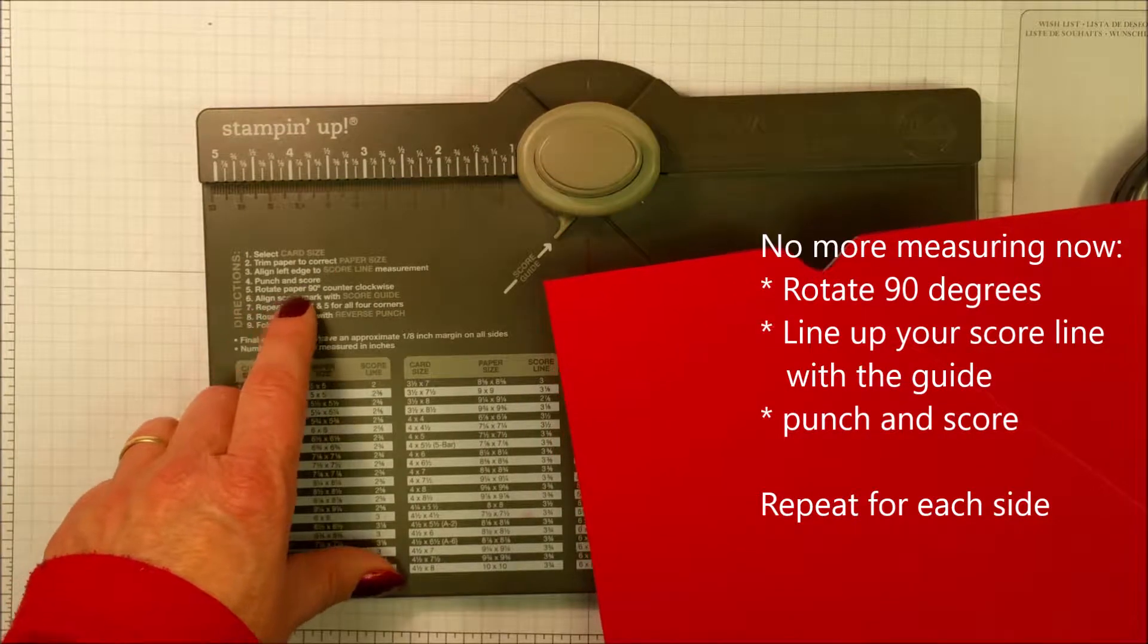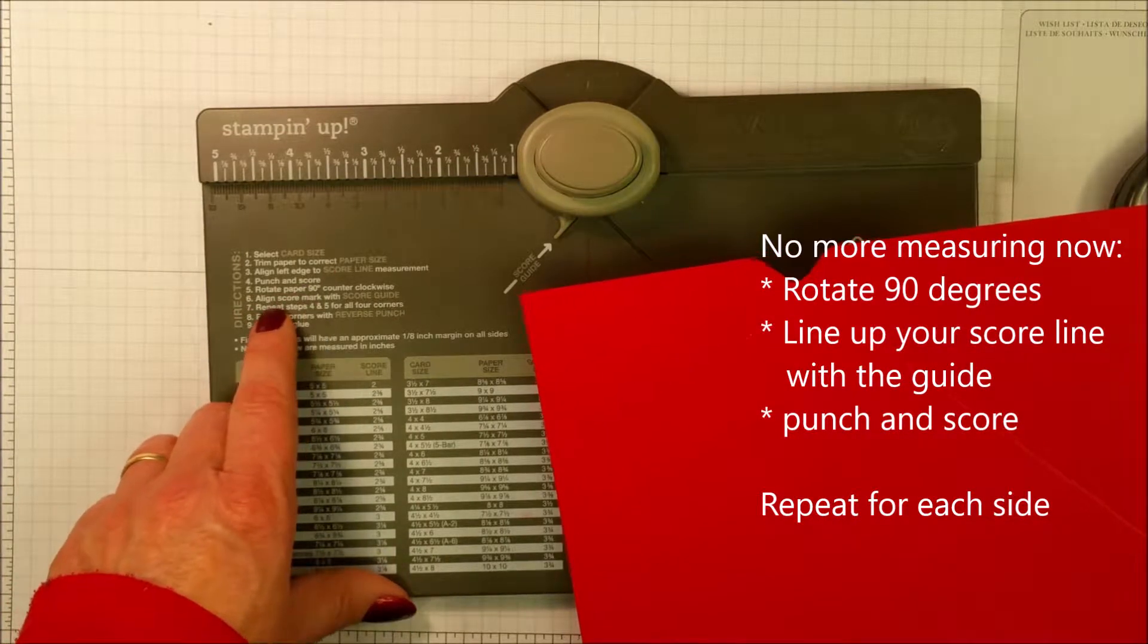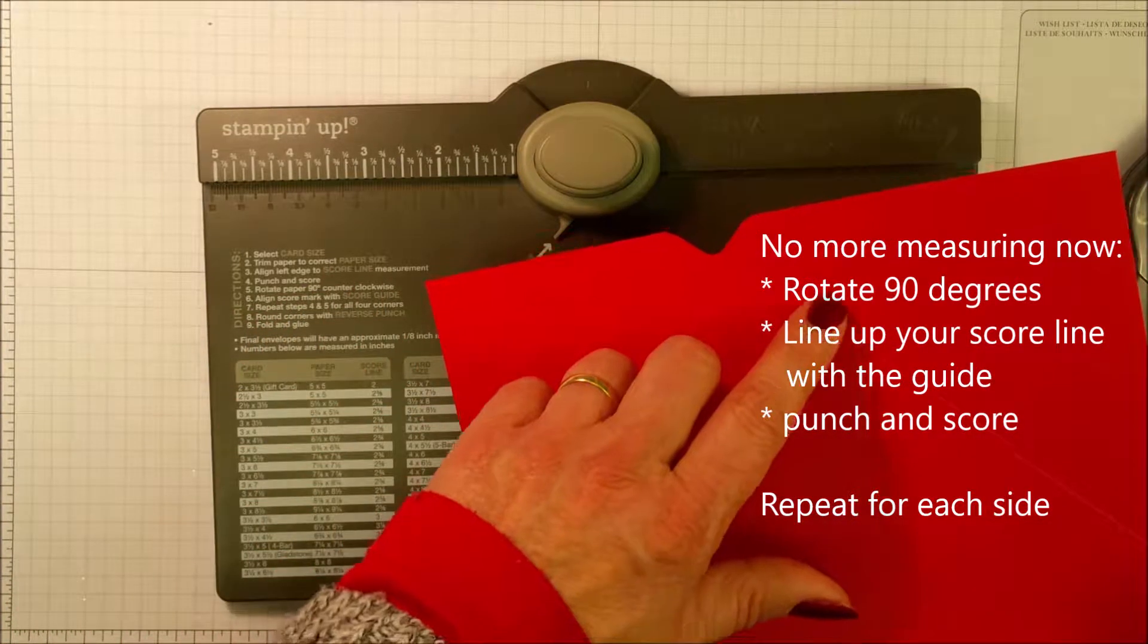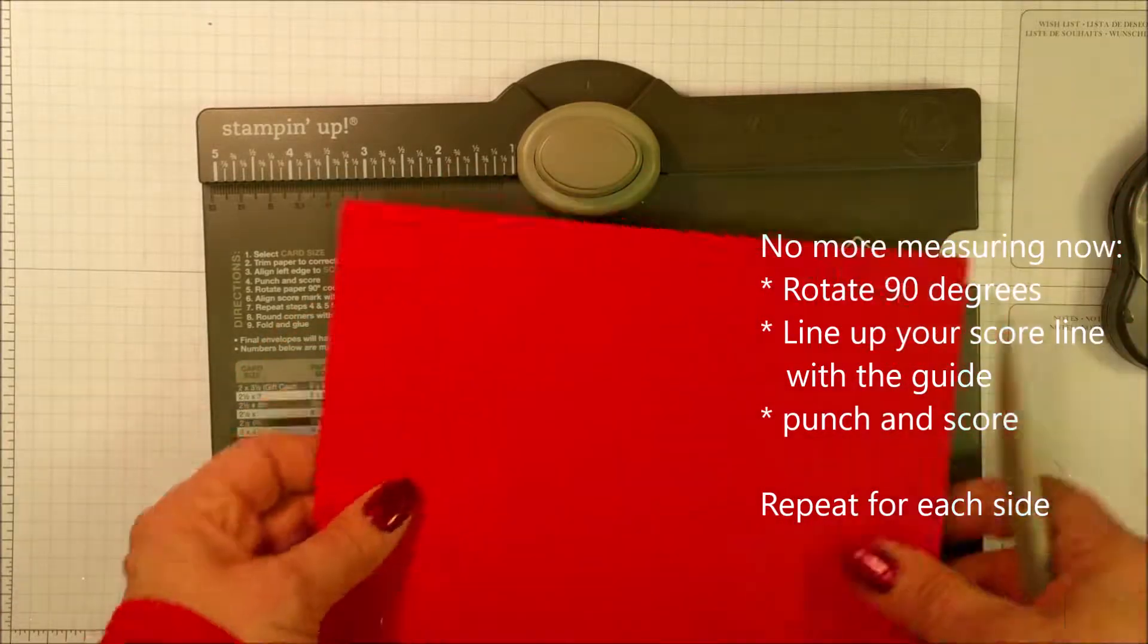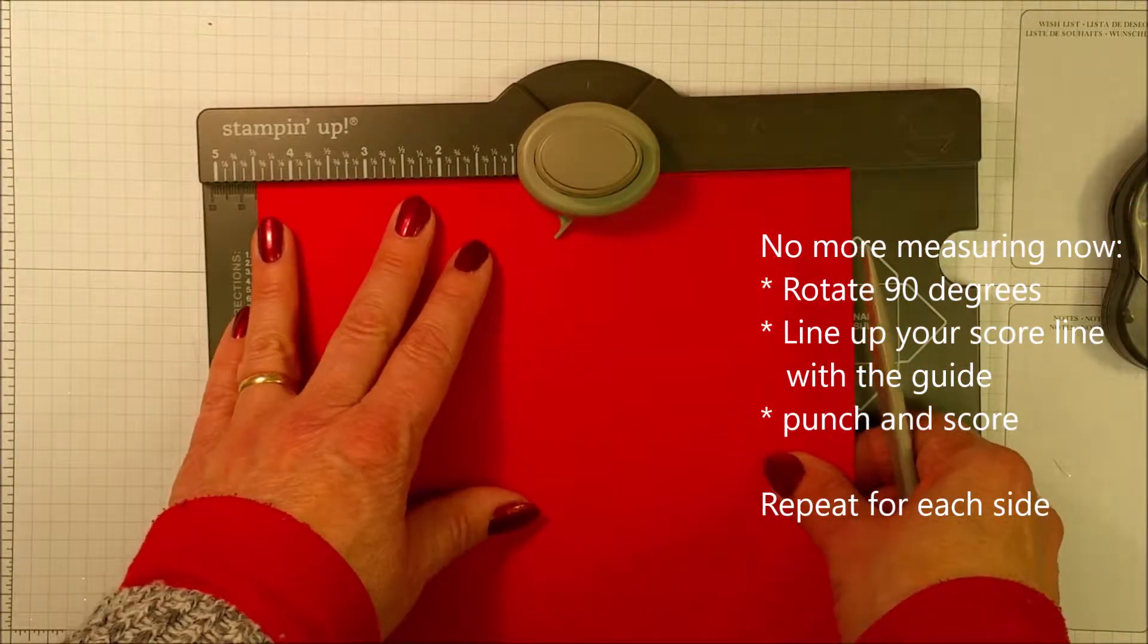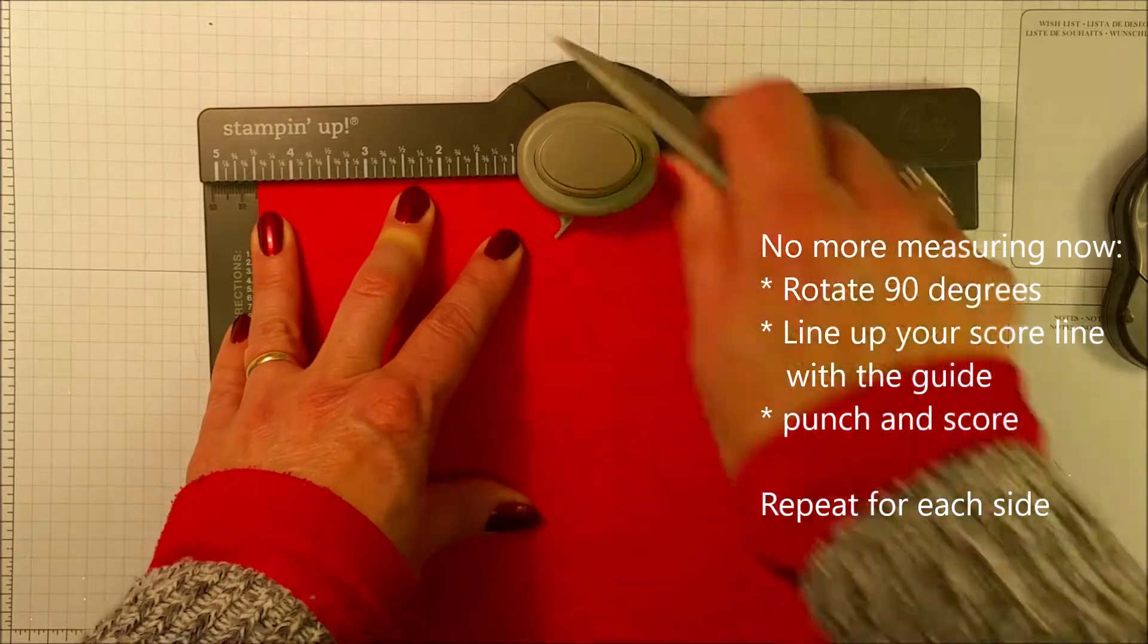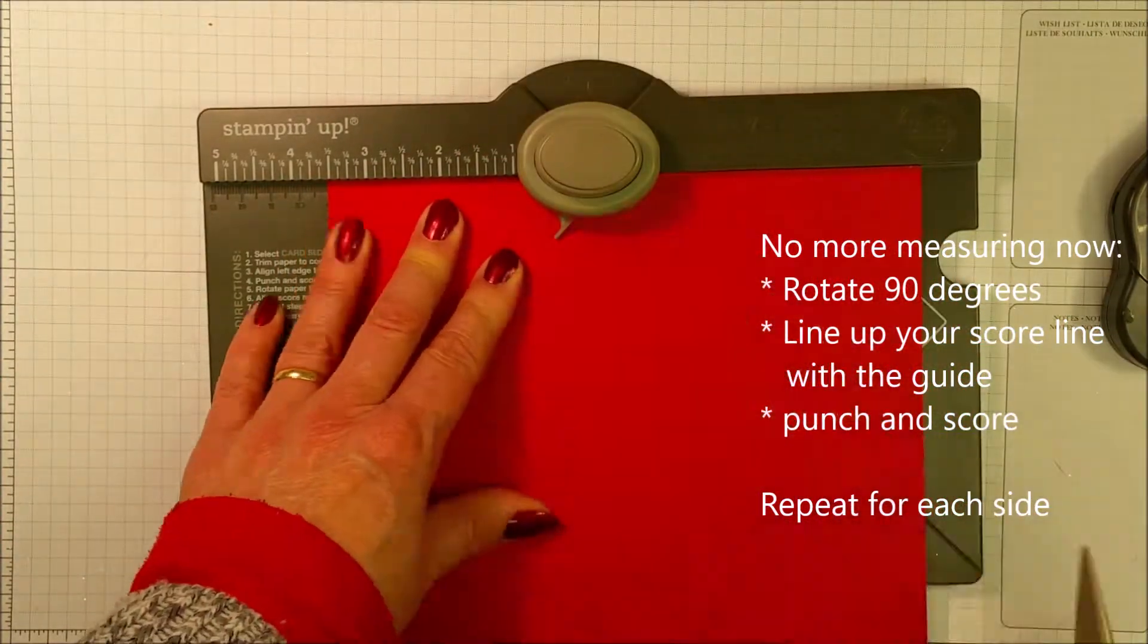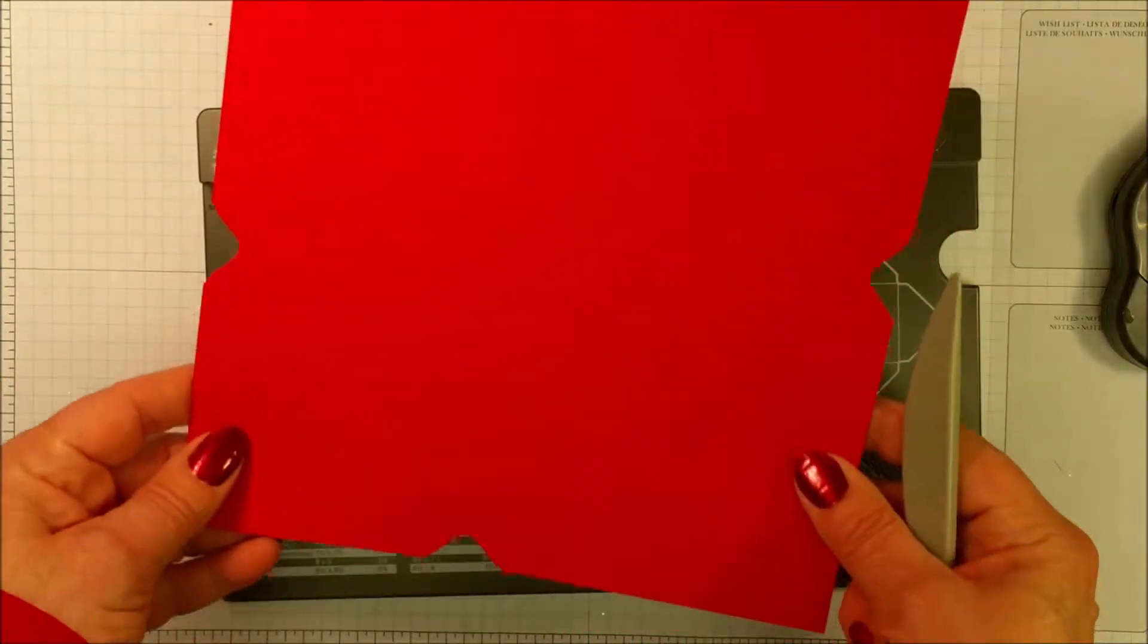The next instruction tells you to rotate the paper 90 degrees. Align the score mark that you just made with the score guide. There's no more using the ruler at this point.